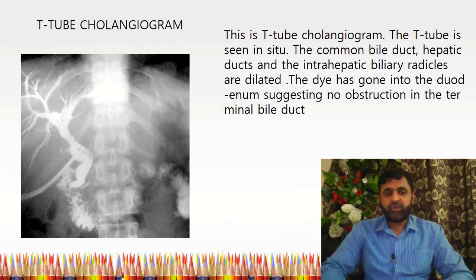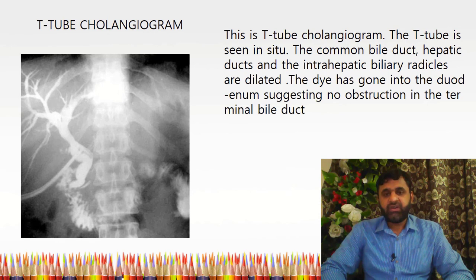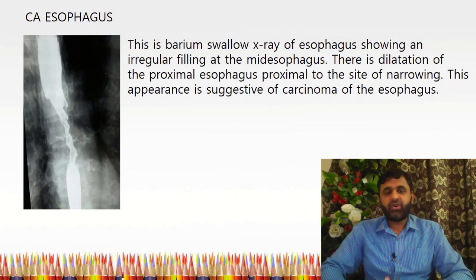This is a T-tube cholangiogram with the T-tube in situ. The common bile duct, hepatic duct, and intrahepatic biliary radicals are dilated. Dye is seen going into the duodenum, suggesting no obstruction in the terminal bile duct. T-tube cholangiogram is usually obtained 10 to 14 days after surgery on the biliary tract.